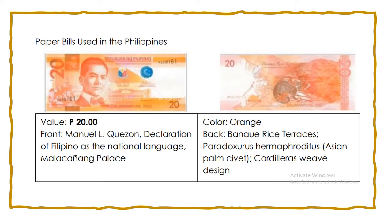This time, let's study about the paper bills used in the Philippines. Let's start with the 20-peso bill. In front is Manuel L. Quezon, the Declaration of Filipino as the National Language, and the Malacanang Palace. Its color is orange. At the back, you would see the Banaue Rice Terraces, the Asian Palms Quivet, and the Cordillera Weave design.